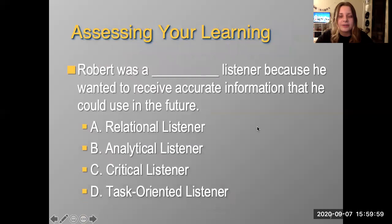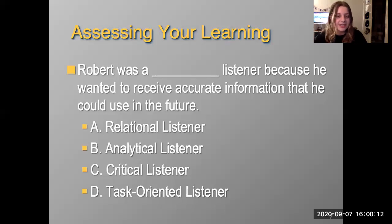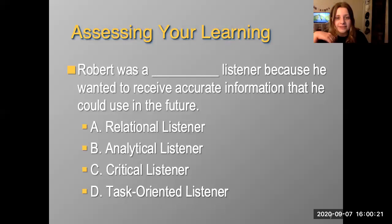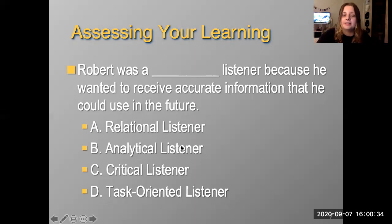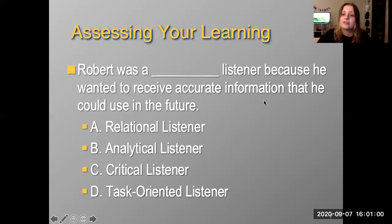Here's a little practice question: Robert was a blank listener because he wanted to receive accurate information that he could use in the future. It's not relational and it's not analytical, so we're left with critical or task-oriented. The keyword is 'receive accurate information,' which points to critical listening. If it had said accurate information to complete an assignment, it would be task-oriented — but because it's about receiving accurate information, it's critical.